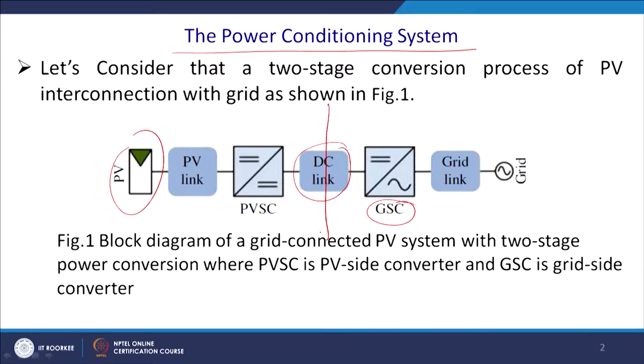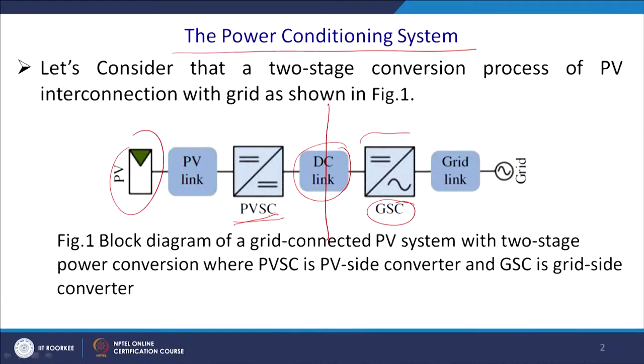The first part is your DC part, and if it is a DC microgrid, this is essentially the flow with the active power filter and active rectifier. This part is essentially a DC-to-AC conversion. This is the block diagram of the grid-connected PV system with two-stage power conversion: one stage is the PV side converter (PVSC) and another is the grid side converter (GSC), which is DC-to-AC.